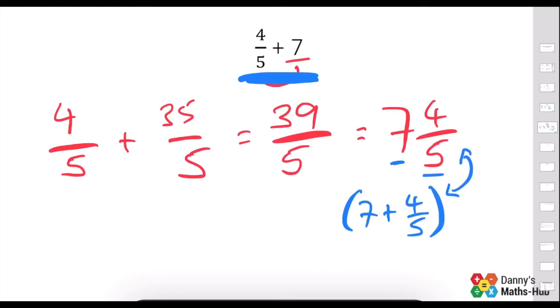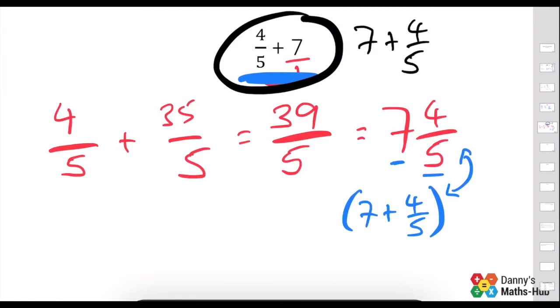Here, this is then 4 fifths and 7, which we can rewrite as 7 and 4 fifths. 7 and 4 fifths, we know we can write like this.